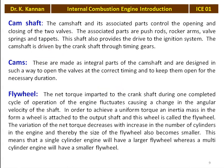All engines have a flywheel to maintain uniform torque and angular velocity of the shaft. The net torque imparted to the crankshaft during one completed cycle fluctuates, causing a change in angular velocity. To achieve uniform torque, a wheel with inertia of mass — called a flywheel — is attached to the output shaft. The variation of net torque decreases with an increase in the number of cylinders, and thereby the size of the flywheel becomes smaller. A single cylinder engine will have a larger flywheel, whereas a multi-cylinder engine will have a smaller flywheel.